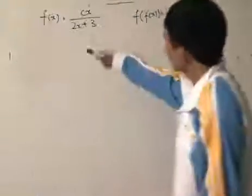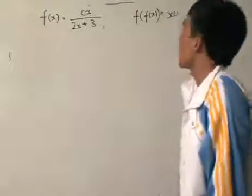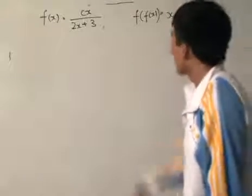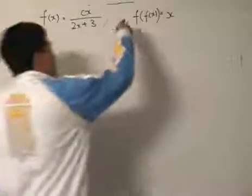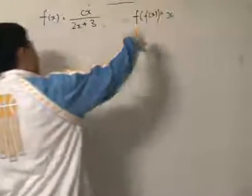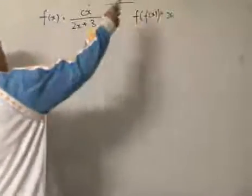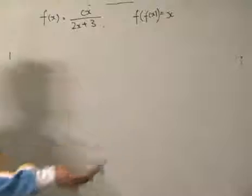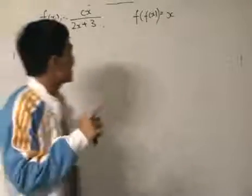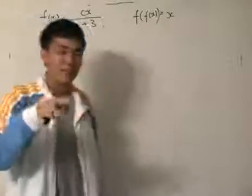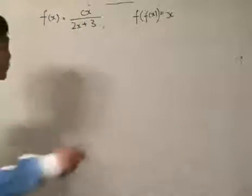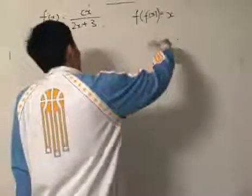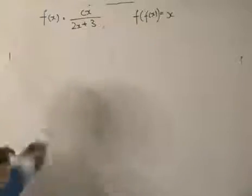So we've got a function f(x) = cx divided by (2x + 3). The question asks us to find the value of c so that f(f(x)) = x itself. It's something like multiplying a number by its inverse to get 1, but totally different — you just take the function of the function and you get x by itself.